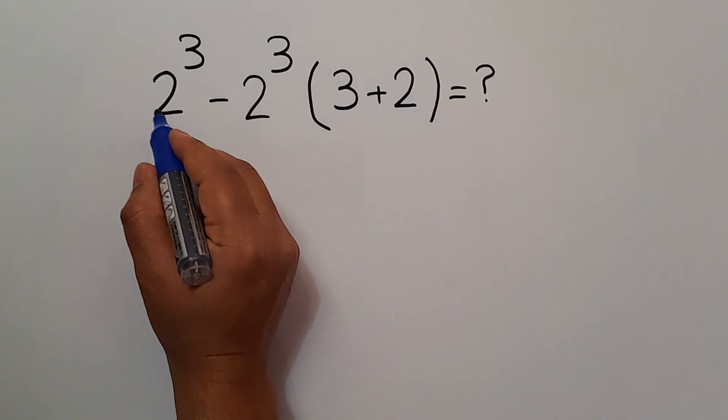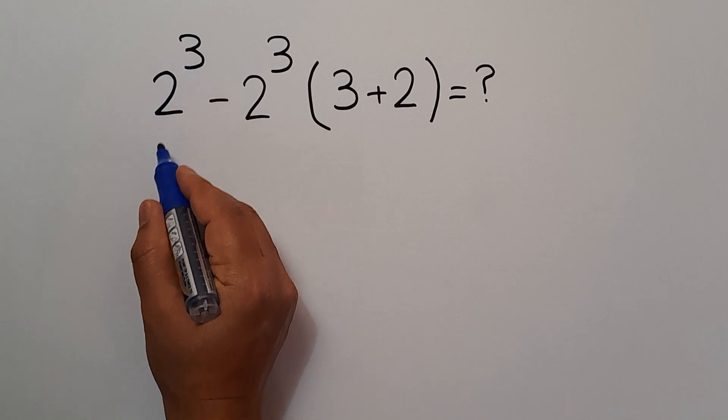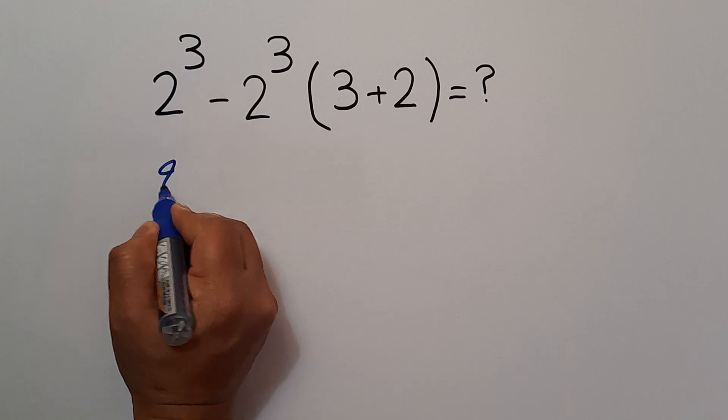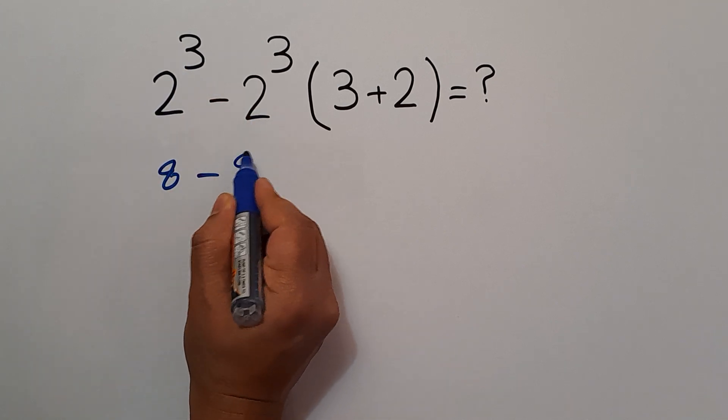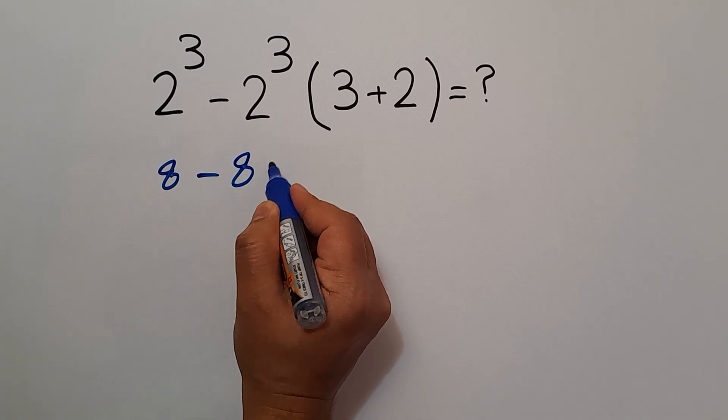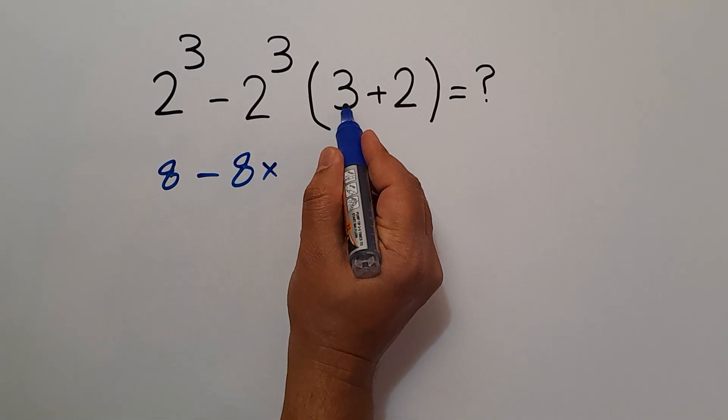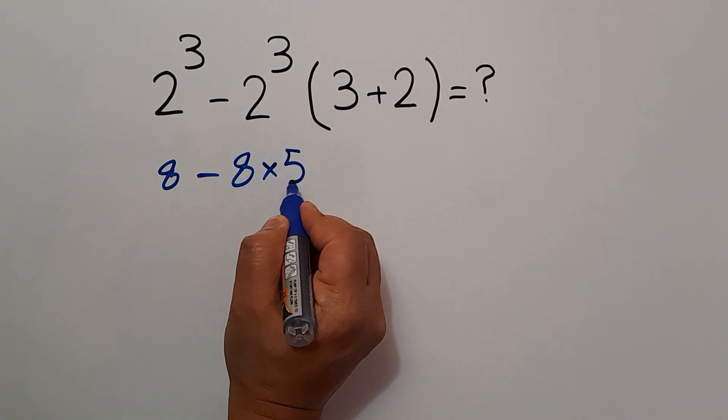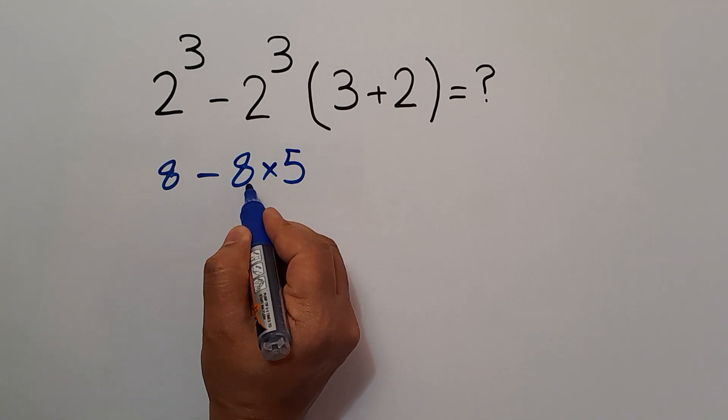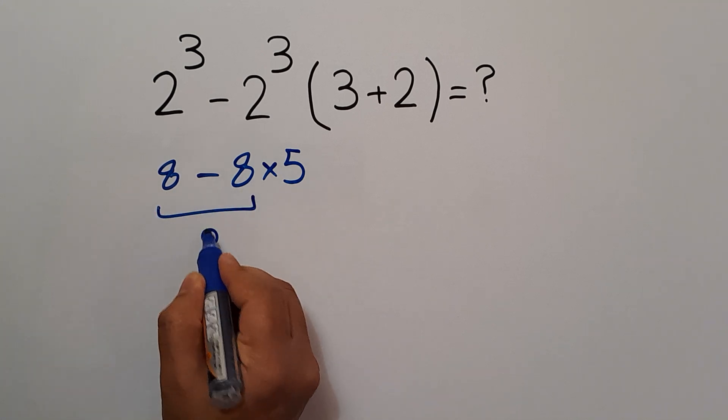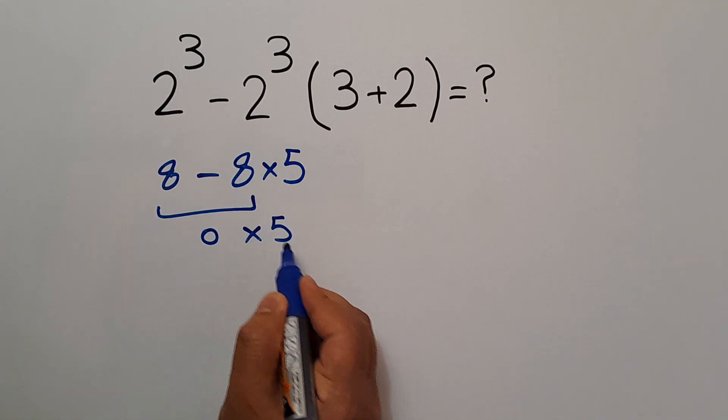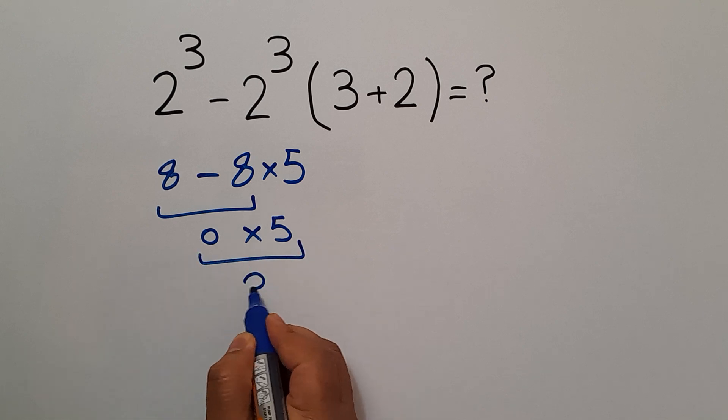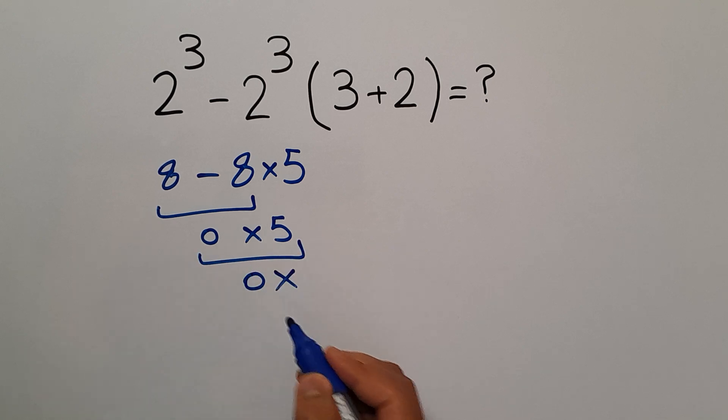Let's get started. 2 cubed gives us 8. So we have here 8 minus, again here, we have 8, then times 3 plus 2 equals 5. 8 minus 8 equals 0. And 0 times 5 is just 0. But this answer is not correct.